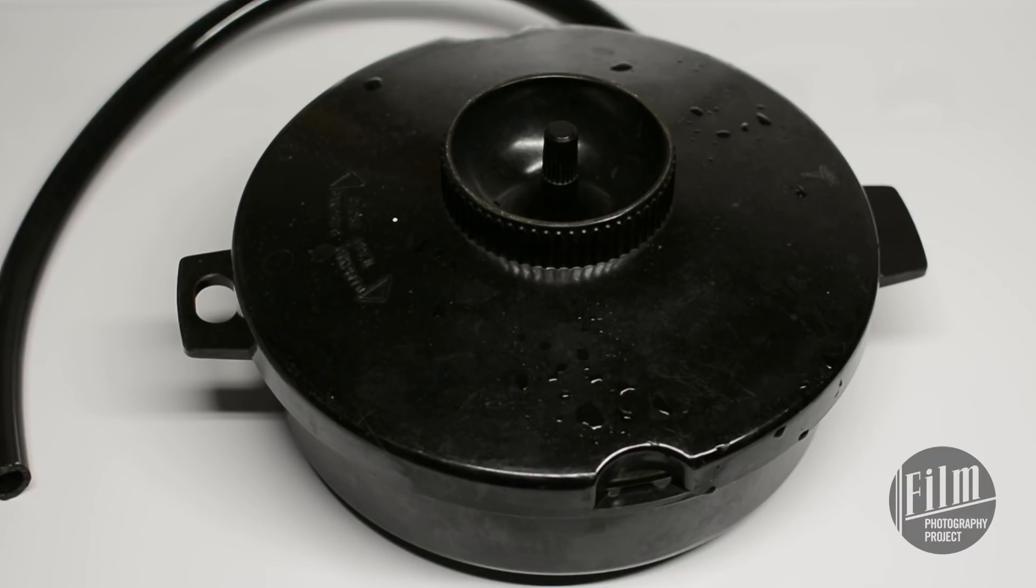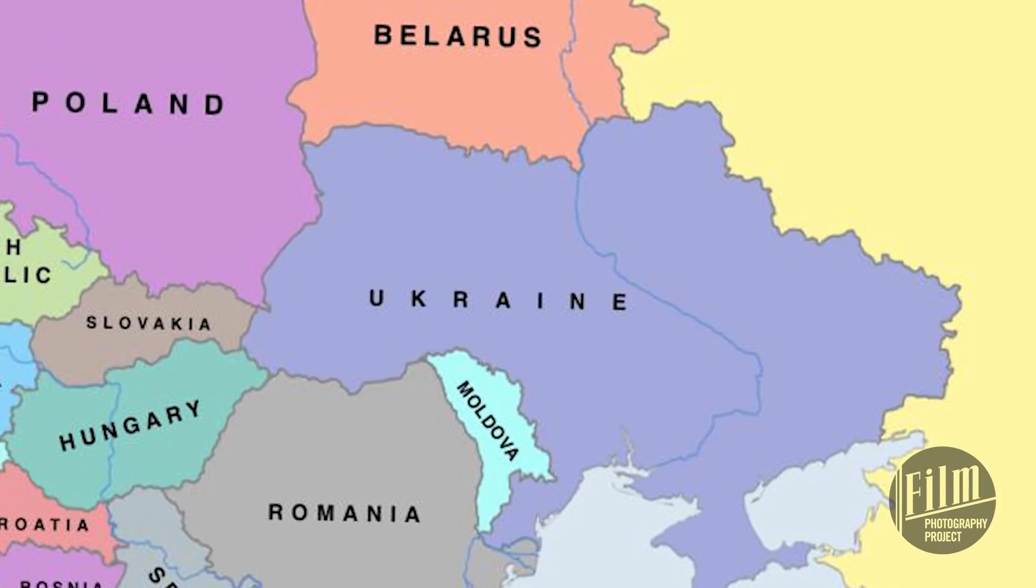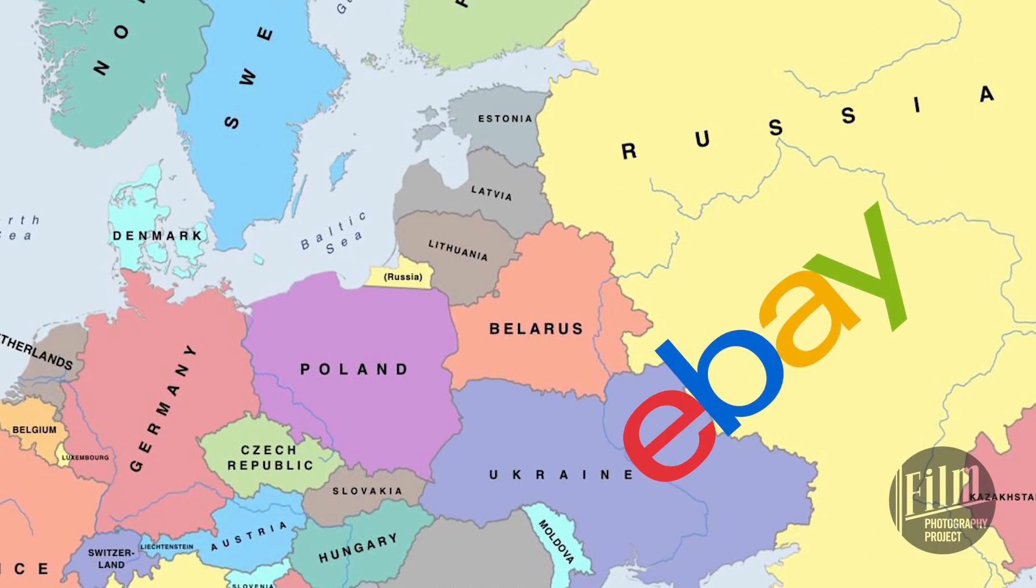Most importantly, you need a tank. The best option I've found is the Lomo UB1 tank. These tanks were originally made in Russia and the Ukraine. They're no longer in production, but you can find used ones on eBay. They'll cost between $150 and $250.